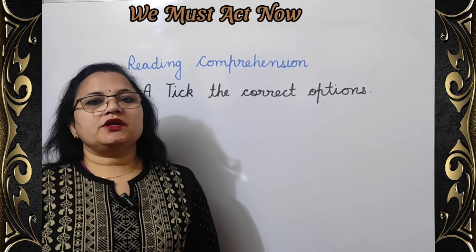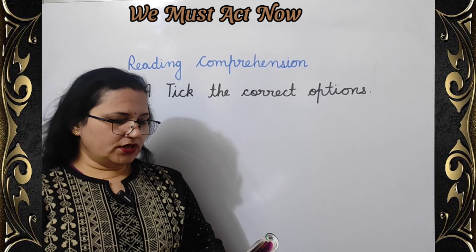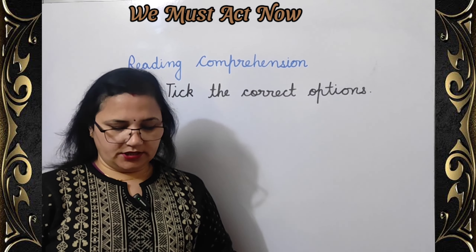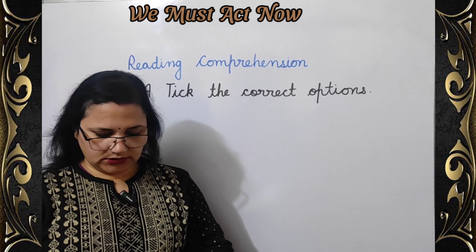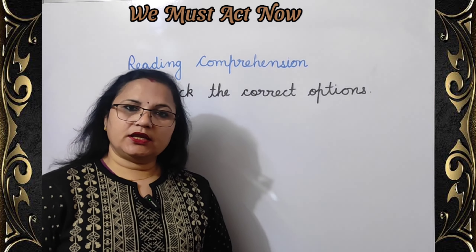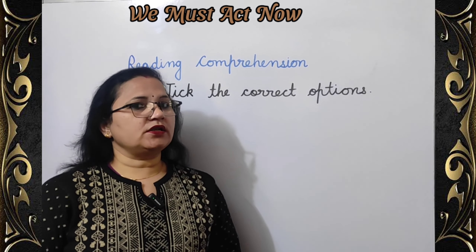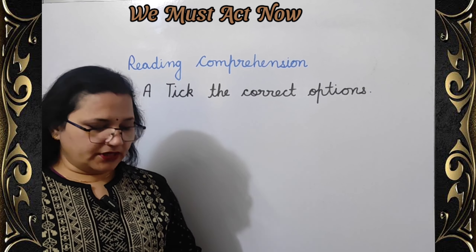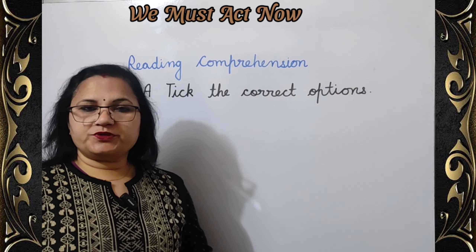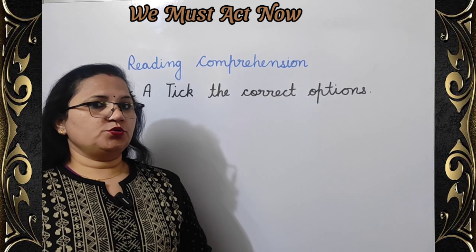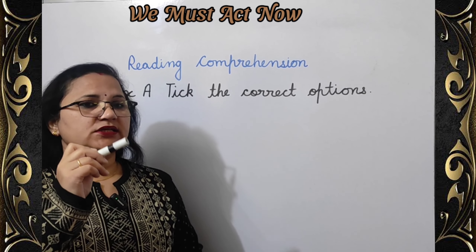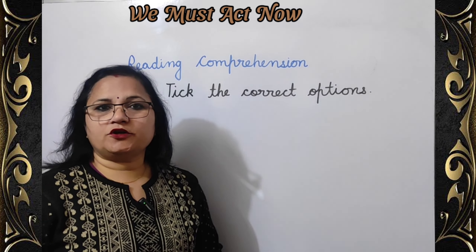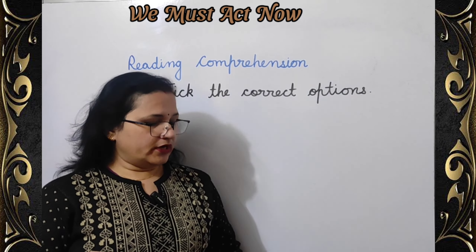Next we are going to do reading comprehension exercise 8. Tick the correct options to complete the sentences given on page number 87. One incomplete statement is given and then four options are there. You have to fill the circle in front of the correct option. So let's start.